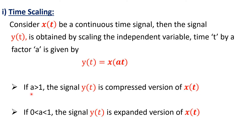If a is greater than 1, the signal y(t) is a compressed version of x(t). Similarly, if the value of a lies between 0 and 1, that is greater than 0 but less than 1, the signal y(t) is an expanded version of x(t).